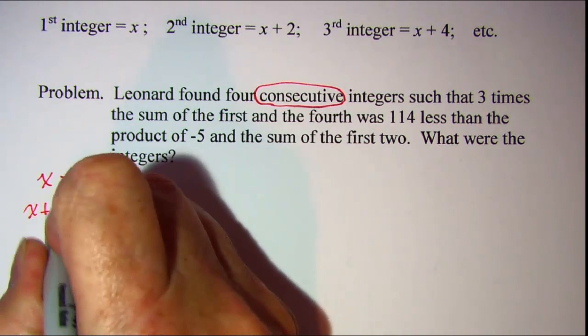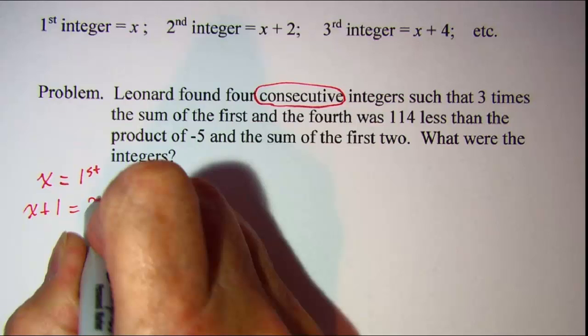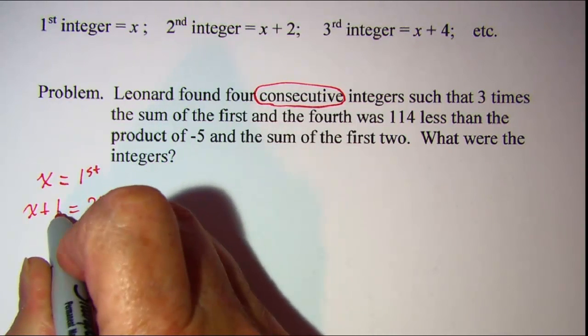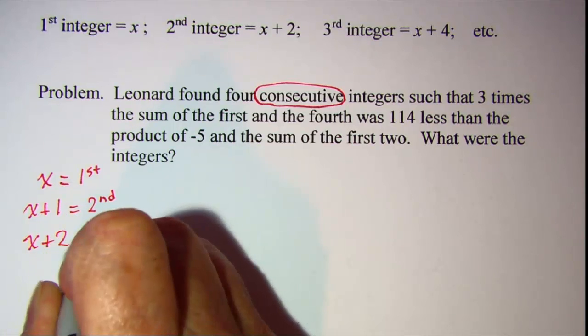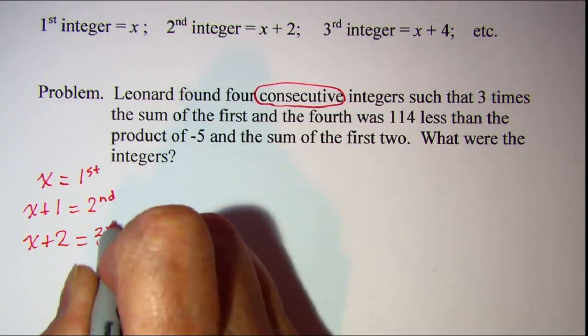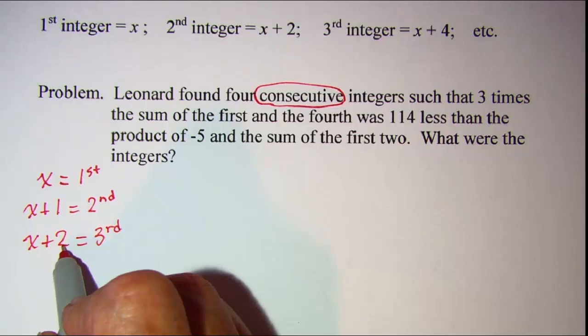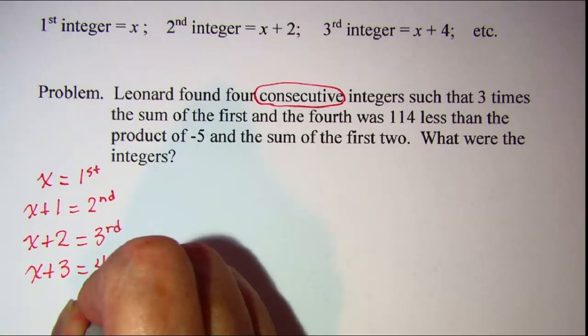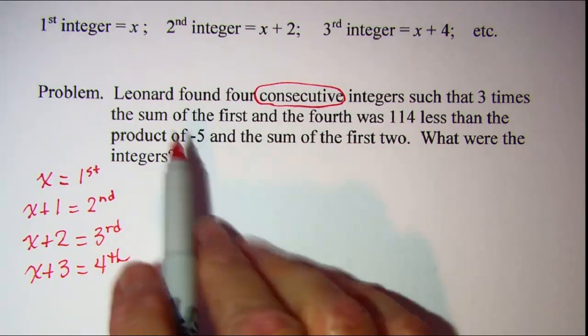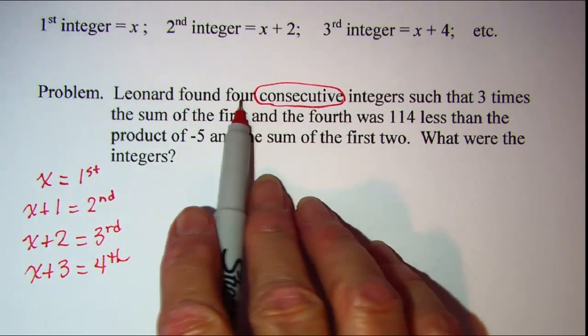So x plus 1 will be my second, add another one onto this, I have x plus 2 will be my third, add another one onto this, and I have x plus 3 is my fourth, and that's all I need because I'm looking for 4.